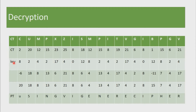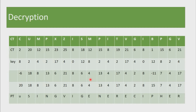Next we list down the key — we already know what it looks like, so we simply write down the numerical values of the same key. With decryption, all you have to do is subtract — it's the opposite of encryption. So we have 2 minus 8, which gives us negative 6; 20 minus 2, which gives us 18; 2 minus 4, which gives us negative 2, and so on. The next step is changing the negative values to their corresponding positive values: negative 6 becomes 20, and negative 11 becomes 15.